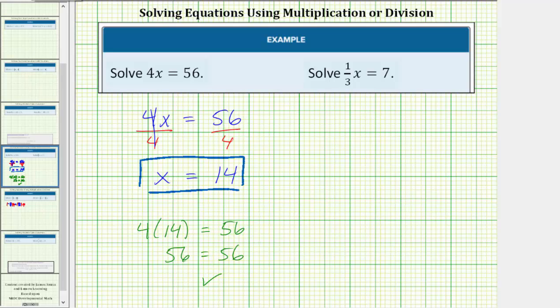And now let's look at the second equation. We have 1 third x equals 7. Again, the solution is the value of x that satisfies the equation or makes the equation true. In order to solve, we need to isolate the variable on one side of the equation. Looking at the left side, we have 1 third x, which means 1 third times x.